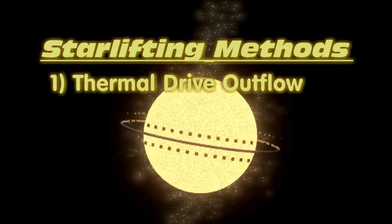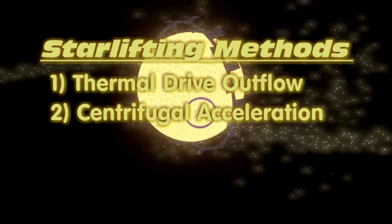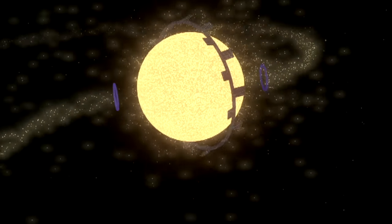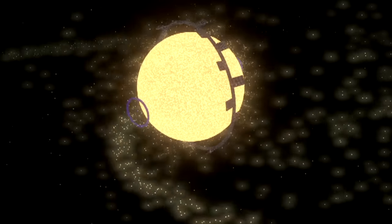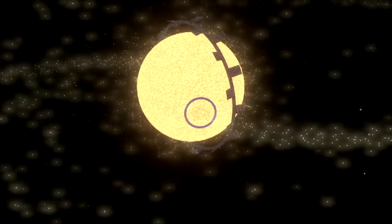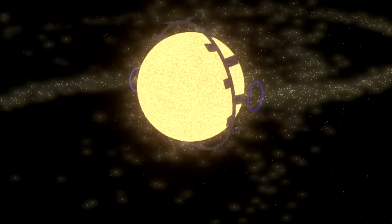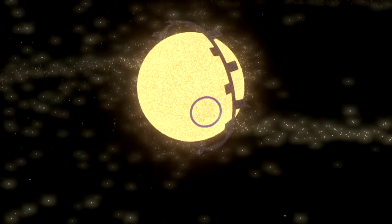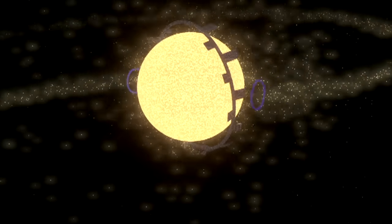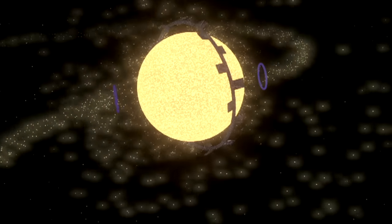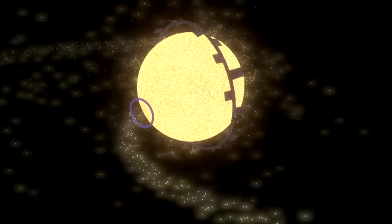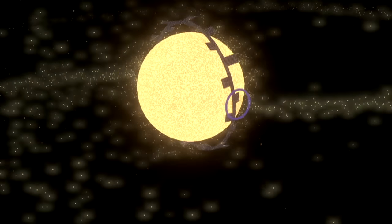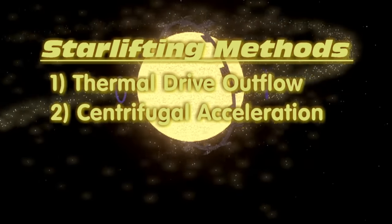Okay, Method 2, Centrifugal Acceleration or CA Starlifting. This is a lot like TDO starlifting but you put your ring around the poles instead and your nozzles around the equator. You then rotate your rings a lot faster than the star rotates and you rotate it around the star's poles and it starts flinging matter outward. This is much harder, since you have to keep pushing on that ring to keep it spinning, but as I understand it this is supposed to create a much faster outflow of matter, albeit sprayed all over the place. So I think this would be the sort of thing you would do if your main goal was not harvesting the star for matter but just lightening it in a hurry. TDO is better, or at least simpler.